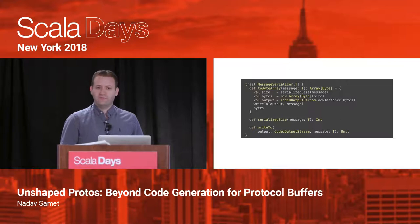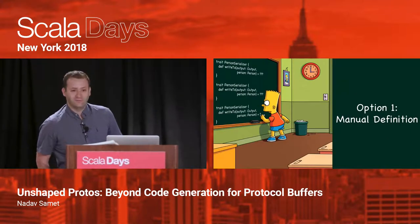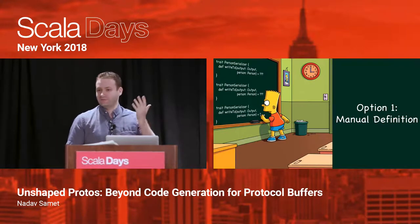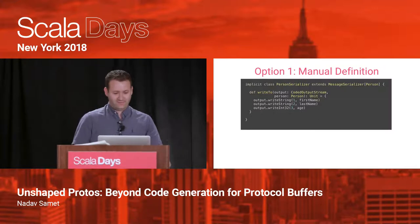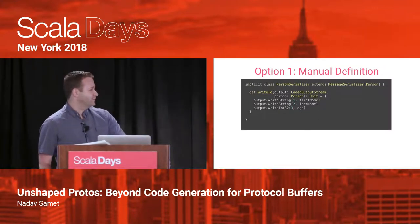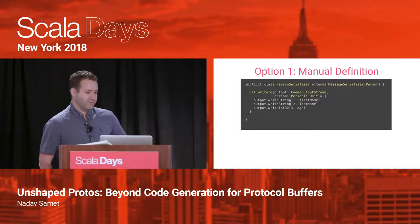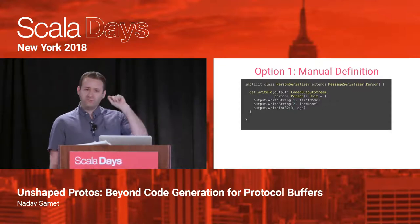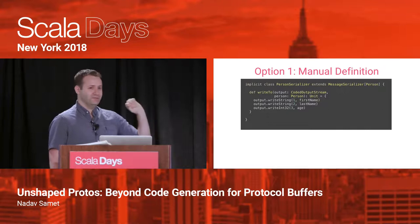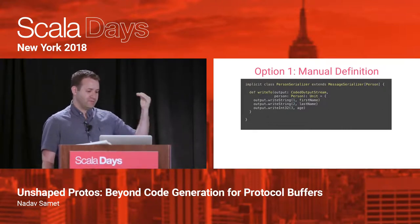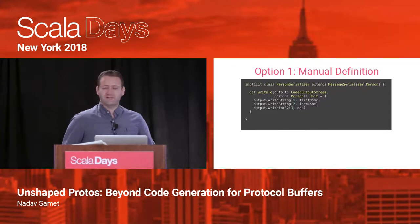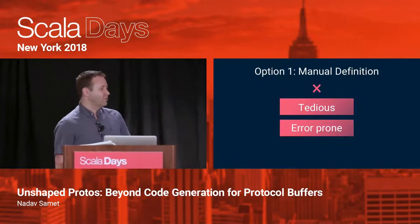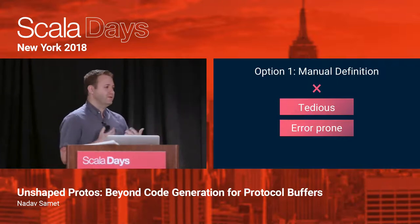The first way to do it is basically not doing it at all — this is the manual definition approach, like the Bart Simpson punishment. We're telling the user: here is what you need to do to serialize a Person. Write your own implicit PersonSerializer, with a writeTo method inside it. Then you go field by field and write it manually into the output stream — output.writeString for first name, another one for last name, and writeInt32 for age. We're expecting users to do this for each of their case classes. This is quite boring, tedious, error-prone, and not fun — but it motivates us to automate this.